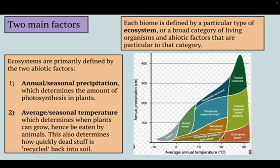So if you want to find a tropical rainforest, all you need to do is find a place that has at least 250 centimeters of rainfall per year and at least 22 degrees Celsius on average for its temperature. But if you decrease rainfall or decrease temperature, you're quickly going to shift away from that biome.